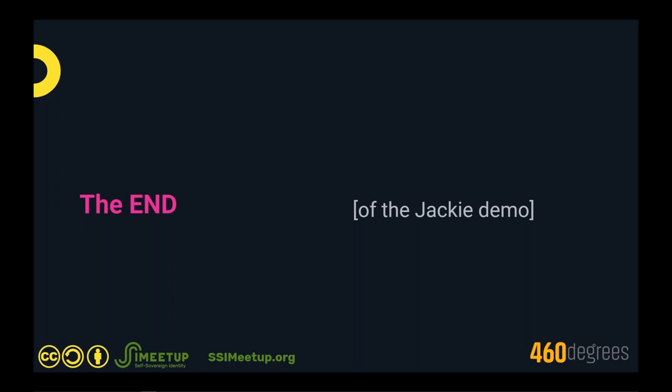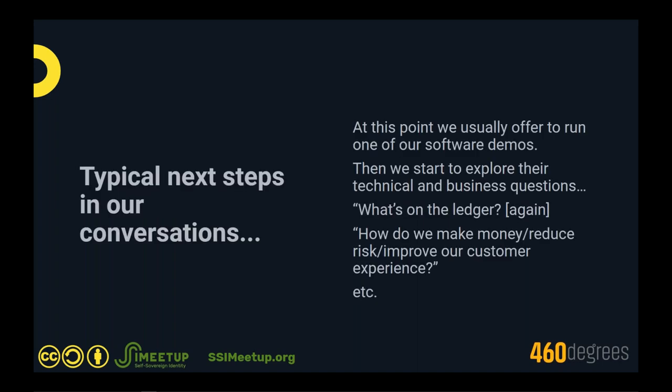We don't like sparkly balls, and that's the end of the Jackie story. At this point we're typically having a very lively conversation. People have often started picking up the pieces and asking questions. The demo is effectively ended, and we normally offer to run the software we have available, then explore their technical and business questions. Interestingly, people are often less concerned about the software — they expect it to work — and more interested in talking about things that have real importance to them as a business. That's one of the key benefits of this approach over the tech-led one.